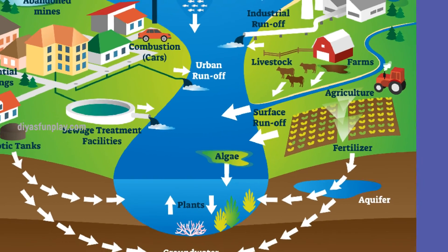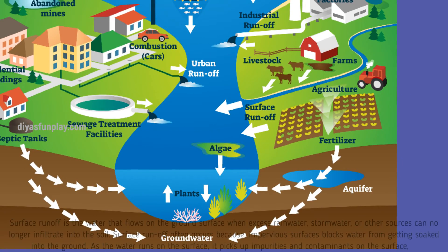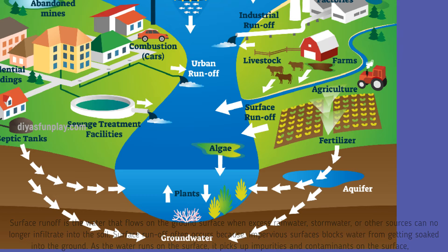Surface runoff. Surface runoff is the water that flows on the ground surface when excess rainwater, stormwater, or other sources can no longer infiltrate into the soil. Surface runoff often occurs because impervious surfaces block water from getting soaked into the ground. As the water runs on the surface, it picks up impurities and contaminants, and finally ends up in large water bodies, thereby polluting them.